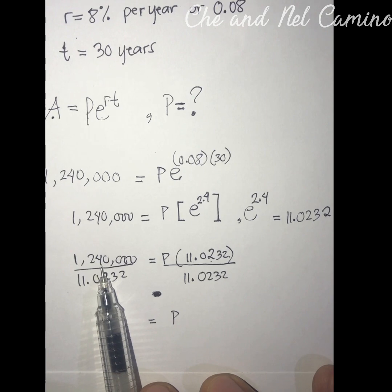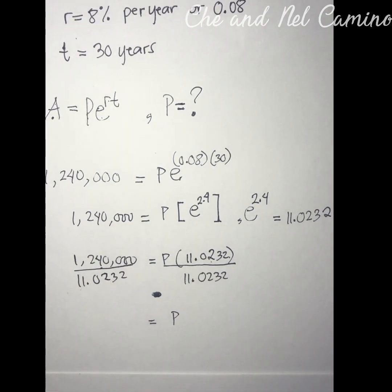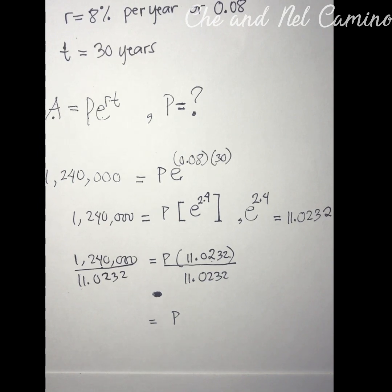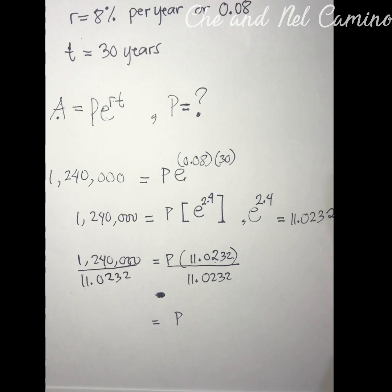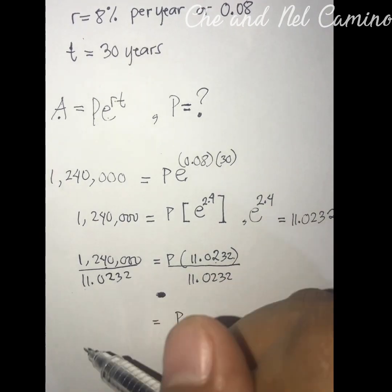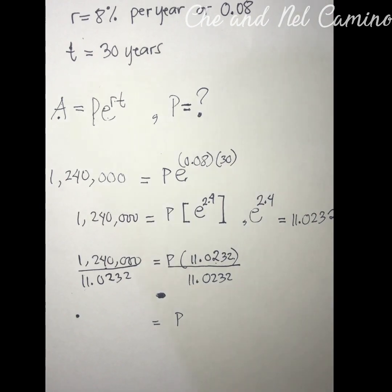So 1,240,000 all over 11.0232, that's equal to... Let's use the calculator.